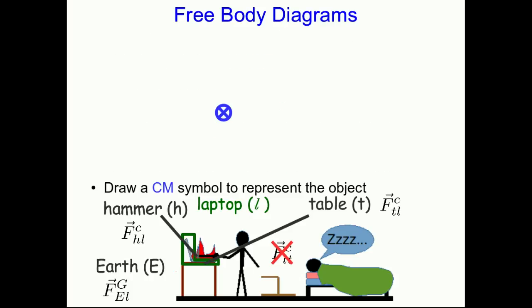Next, draw a center of mass symbol to represent the object. Remember, we're thinking of the object as a point. It doesn't matter where on the object the forces act. It won't affect the translational motion, and so we don't want to be distracted by where on the object the forces act. So we'll represent it as a center of mass symbol.